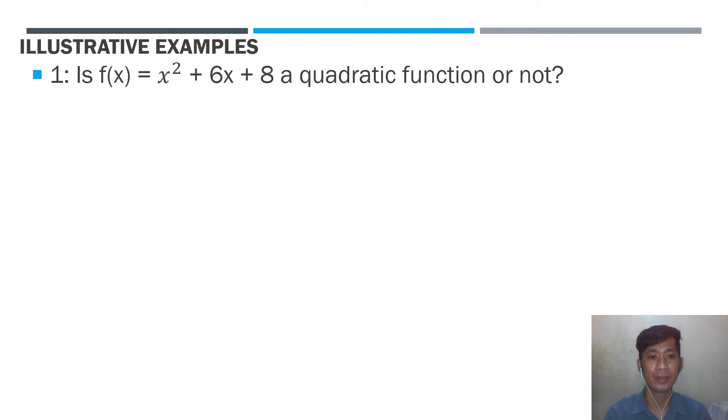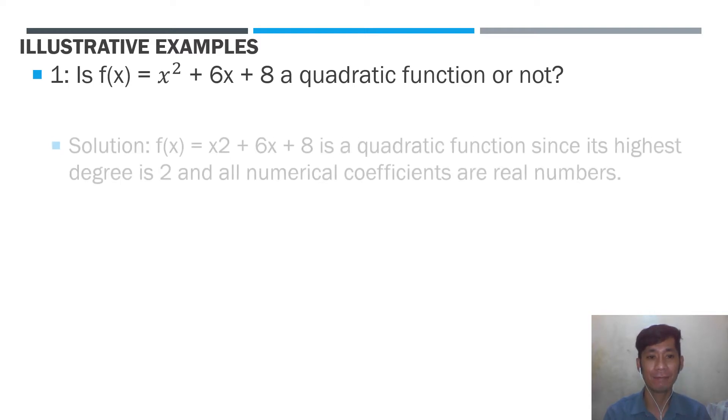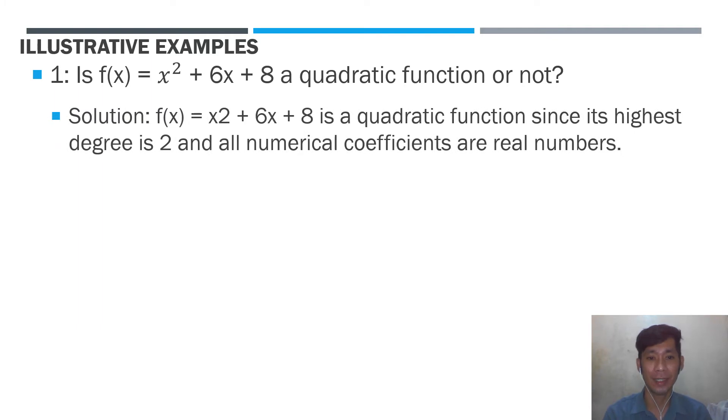Let us have an illustrative example. First one, is f(x) = x² + 6x + 8 a quadratic function or not? The solution: f(x) = x² + 6x + 8 is a quadratic function since its highest degree is 2 and all numerical coefficients are real numbers.